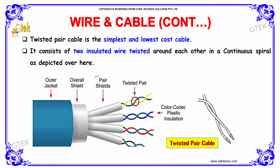The twisted pair cable is the simplest and lowest cost cable. It consists of two insulated wires twisted around each other in a continuous spiral, as depicted here. You can see the twisted pairs — made into a pair shield, put into an overall shield, and there is an outdoor jacket. This is twisted pair cable.